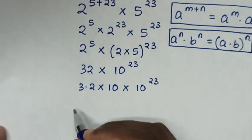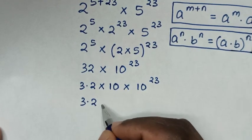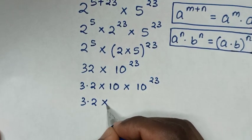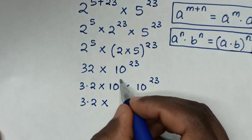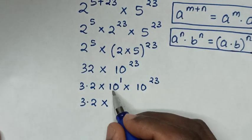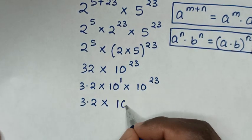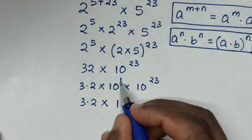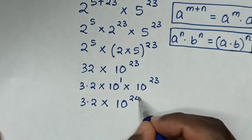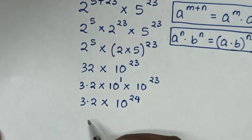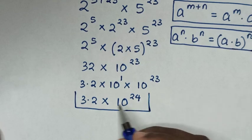Then it will be 3.2 times — here, 10 is the same as 10 to the power of 1. Now, it is multiplication of exponents with the same base, so 10 to the power of 1 plus 23 is 10 to the power of 24. So 3.2 times 10 to the power of 24 is our final answer.